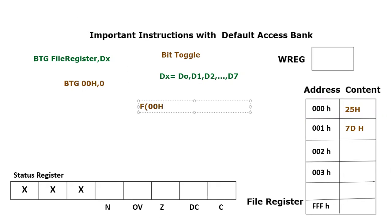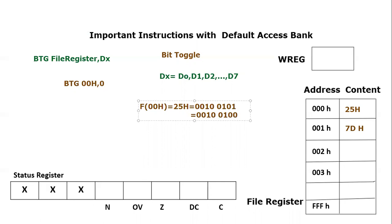File register 00h equals 0x25, which is 0010 0101 in binary. We are going to toggle the D0 bit — this is D0, this is D1, this is D2, and so on. This bit is currently one, and after execution of this instruction it will be toggled. Toggle means if it is zero it becomes one, and if it is one it becomes zero. So the result is 0010 0100 — all bits are the same except the zeroth bit, which becomes zero. In hexadecimal, that becomes 0x24.